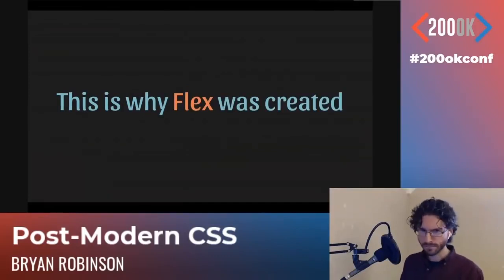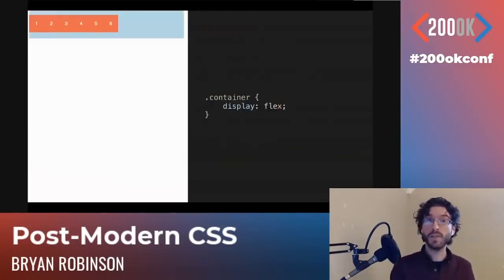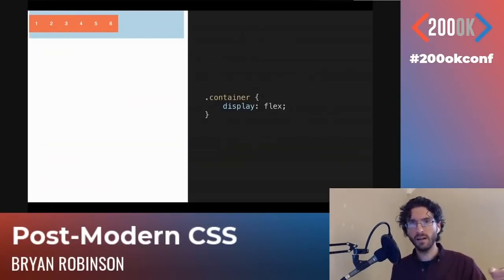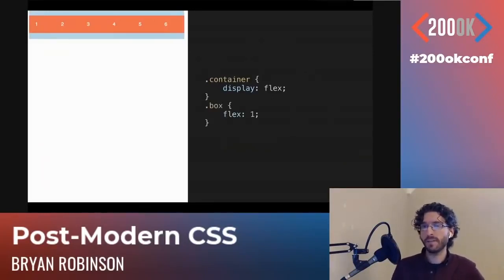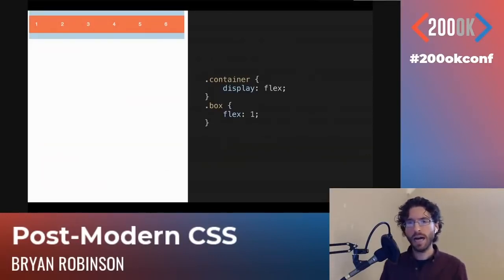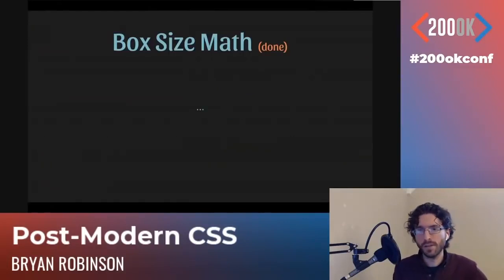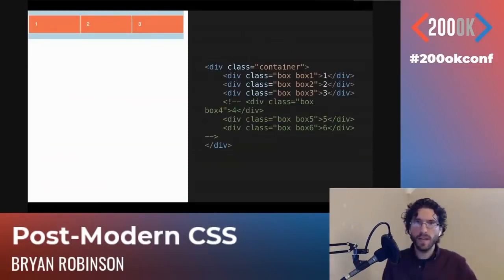This is why Flex was created. Same example — six boxes in a container, we want to get them side-by-side. On our container, we change its display value from the default block to display: flex. By default, we get all six boxes side-by-side, sized by their content — the amount of space those numbers take up and the padding. We don't have to worry about the math anymore; it is handled for us by flex. Then if we want them to stretch to fill that space, we say flex: 1, and that allows it to grow. It's actually a shorthand for flex-grow, flex-shrink, and flex-basis. We have six boxes side-by-side without doing any math.